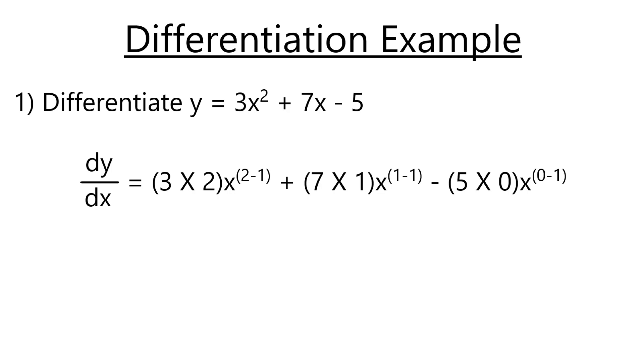For the next part, we're going to have 7 × 1, because that is to the power of 1, that x. And then the x is going to be 1 - 1, because it's to the power of 1 minus 1. And then next, we're going to have 5 × 0, because it's effectively x^0, which is 1. And then it's going to be x^(0-1).